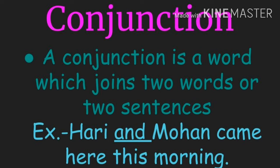Conjunction. A conjunction is a word which joins two words or two sentences. Example: 'Hari and Mohan came here this morning.' A conjunction can also be called a connector — it joins two words, two sentences, or two phrases. Here, 'Hari' and 'Mohan' are both nouns, and the word 'and' is joining these two words together. Therefore, 'and' is a conjunction.